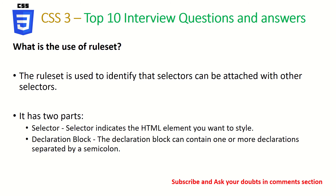What is the use of a rule set in CSS? A rule set is used to identify that selectors can be attached with other selectors. We can define a CSS rule set to indicate what block we want to use and how. For example, inside a div we can target a link — that kind of rule set allows us to specify targets precisely.